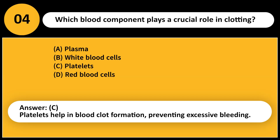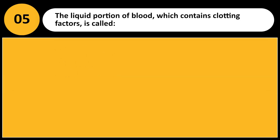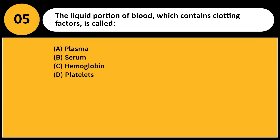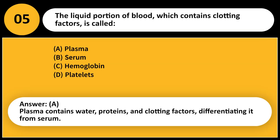The liquid portion of blood, which contains clotting factors, is called: A. Plasma. B. Serum. C. Hemoglobin. D. Platelets. Answer: A. Plasma contains water, proteins, and clotting factors, differentiating it from serum.